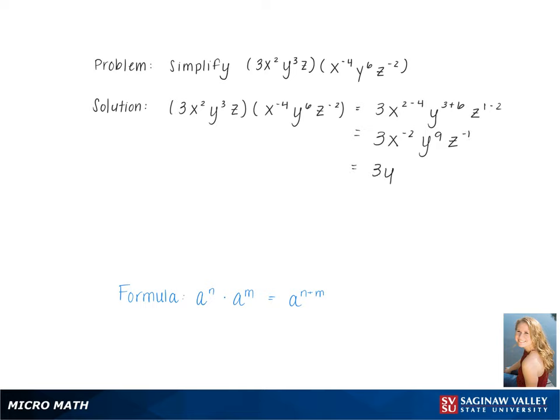Moving the negative powers down to the bottom of the fraction, we get 3y to the ninth over x squared z, which is our final answer.